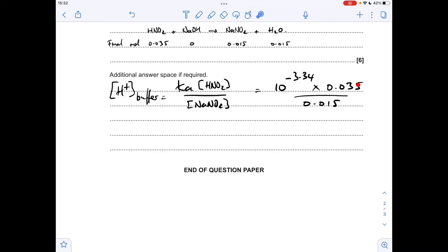Multiplied by the acid concentration which was 0.035, divided by the salt concentration 0.015. So the H+ concentration is coming out at 1.0665 times 10 to the minus 3 molar. All we need to do now is minus log that, which gives a pH of 2.97.